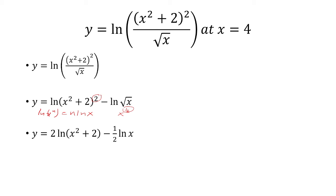We take the derivative of this now. We have 2 over x squared plus 2 times the derivative of x squared plus 2. So that's going to be 2 times 2x at the top, which is 4x over x squared plus 2. And then the derivative ln of x is 1 over x, so we multiply that by negative 1 half.